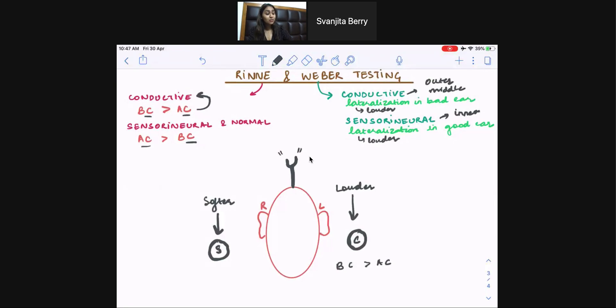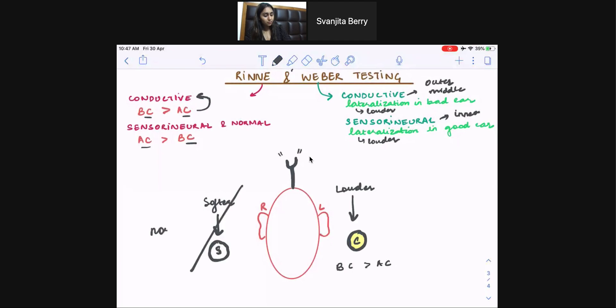And my results show that bone conduction is louder than air conduction. Now, this confirms conductive hearing loss in my left ear. Okay, that means I can reject this possibility here, and this is my normal ear.